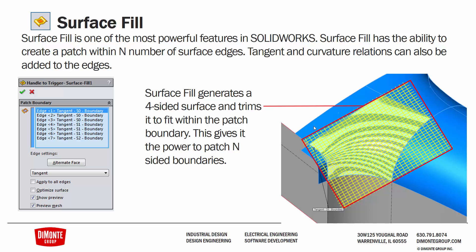The surface fill is one of the most powerful features in SolidWorks. It has the ability to create a patch with any number of surface edges — as many sides as required. It's great for three-sided surfaces, avoiding the degenerate point that the boundary surface would introduce, and also for five-plus-sided patches. What the surface fill actually does is build a larger four-sided surface and trim it back. Always turn off 'optimized surface' when using surface fill — if left on, it will silently generate a surface loft instead. Turning it off uses different algorithms to create that over-built four-sided surface and trim it to fit the profile.